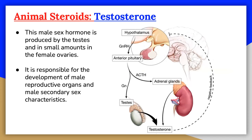Testosterone is produced by the testes, although small quantities are also produced by the adrenal glands in both sexes. It stimulates the development of male characteristics and is present in much greater levels in men than women. Testosterone initiates the development of the male internal and external reproductive organs during fetal development and is essential for the production of sperm in adult life. This hormone also signals the body to make new blood cells, ensures that muscles and bones stay strong during and after puberty, and enhances libido in both men and women. Testosterone is linked to many of the changes seen in boys during puberty, including an increase in height, body and pubic hair growth, enlargement of the testes, and changes in sexual and aggressive behavior.